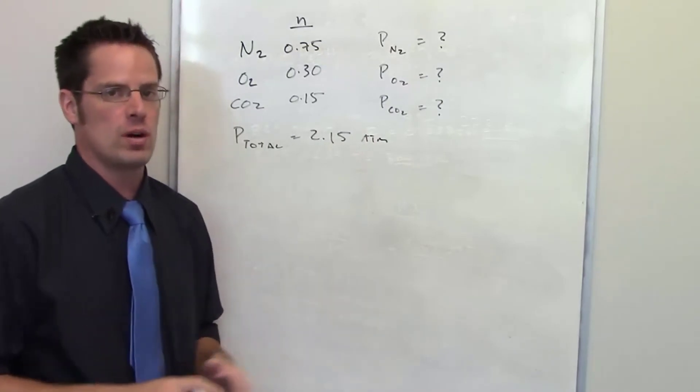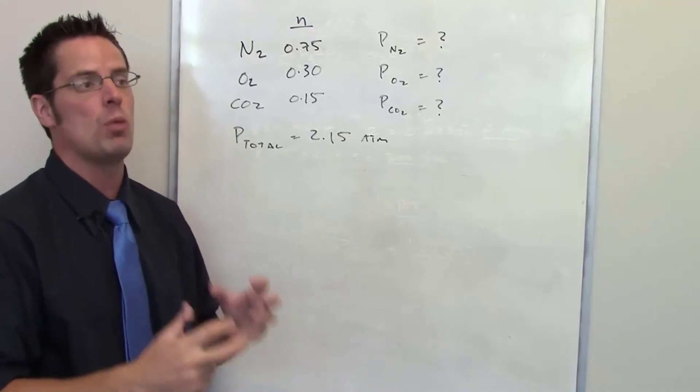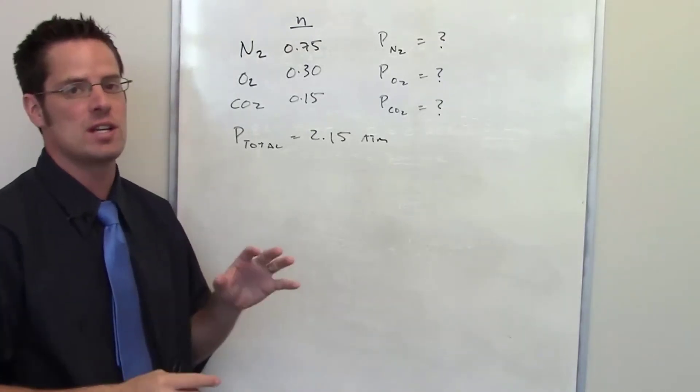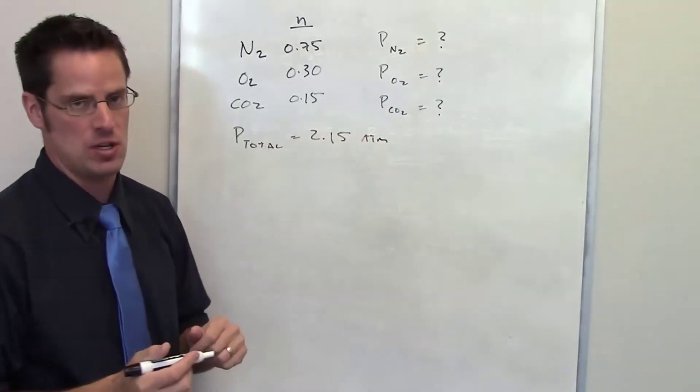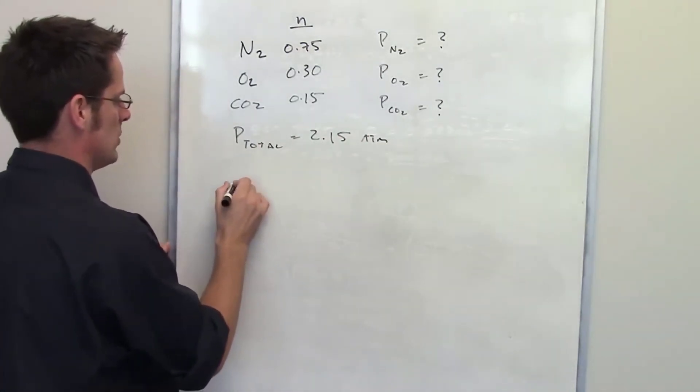As we've learned before using Dalton's law, we know that the number of moles of each gas, or mole percentage, is proportional to the number of individual pressures for each gas. So what I need to do then is to determine the total number of moles of all of the gases together.